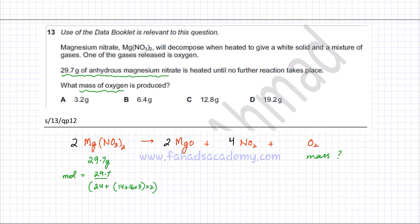Using my calculator, it's going to be 29.7 divided by 24 plus 14 plus 16 times 3 times 2. So that would be equal to 124 in the denominator. When I do the division, the answer that I'm getting is 0.2 moles, approximately 0.2 moles rounded to 3 significant figures.